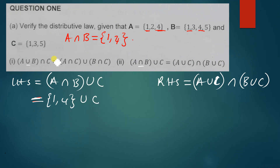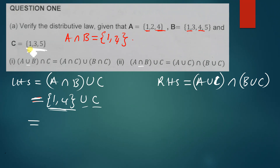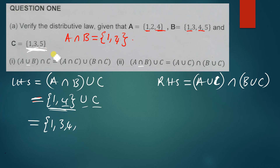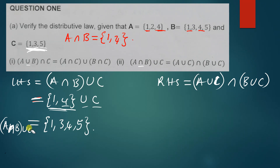So A intersection B equals one, four. Then we say union C, where C is one, three, five. We have to combine the set containing one and four with the set one, three, five. Combining them, we get one, three, four, five. So this is our left hand side: A intersection B union C equals one, three, four, five.